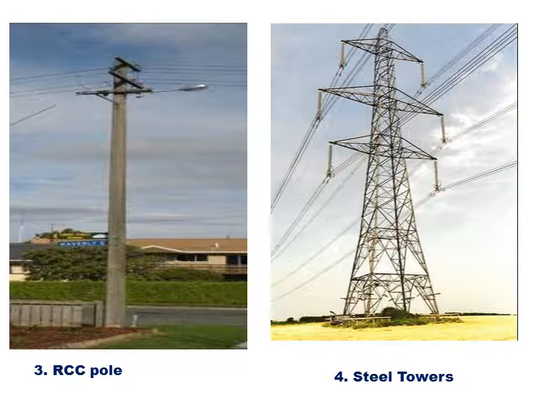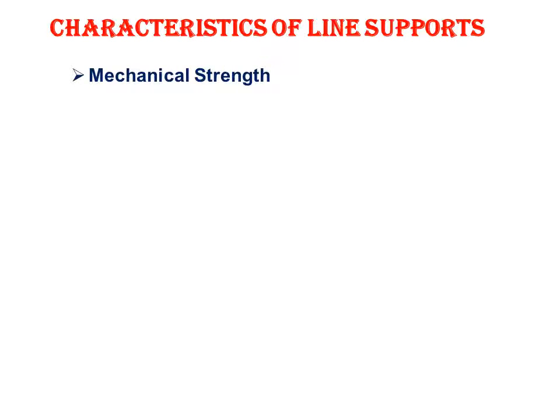Now let's see the characteristics of line supports. First is mechanical strength — the most important factor. If we consider a tower or support, its mechanical strength must be very high. The support must carry the weight of the line, conductors, accessories, and withstand atmospheric pressure.